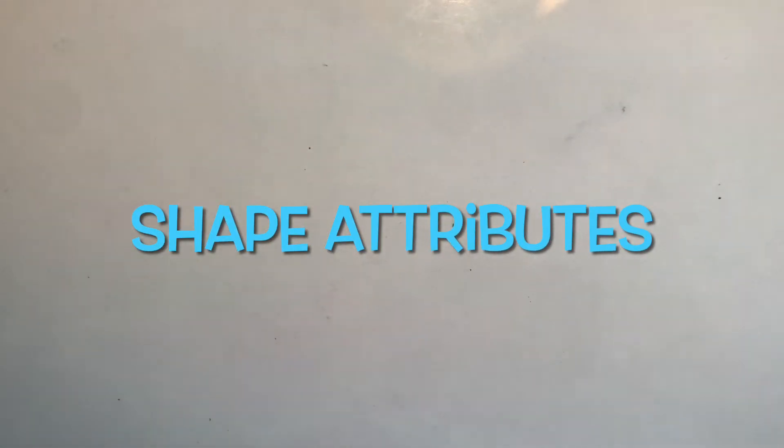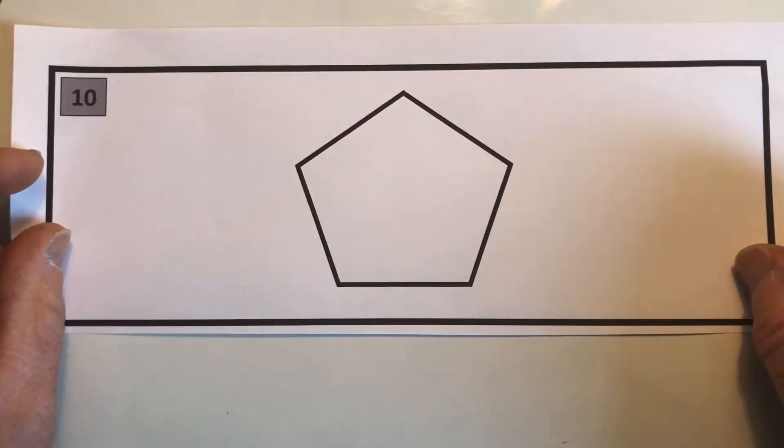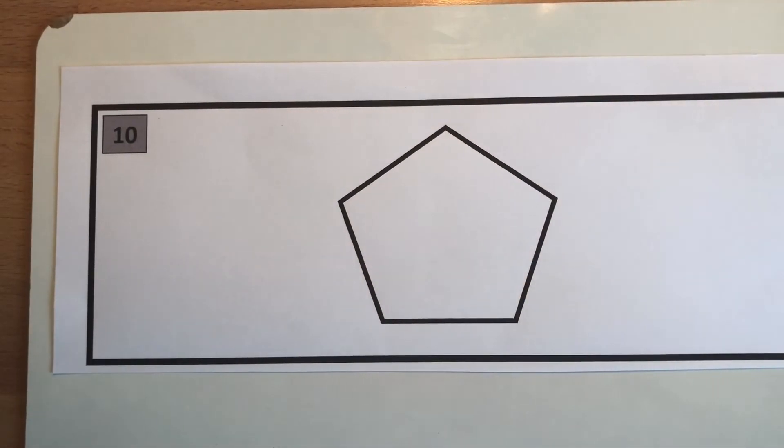Good morning fourth graders, we're gonna start math class off per usual talking about shape attributes. Get your whiteboards out, I've got mine out right here and we're gonna draw a shape. That shape is right here. Let me outline it for you and I want you to draw as best you can.